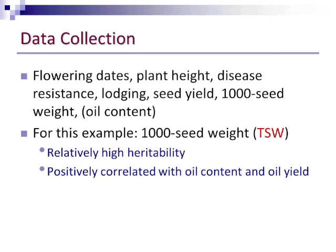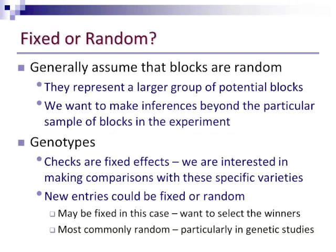For this example, we'll just look at the variable 1,000-seed weight. It has a relatively high heritability, and it's positively correlated with both oil content and oil yield.